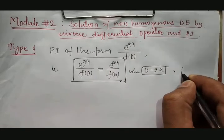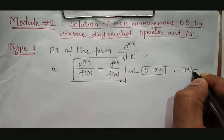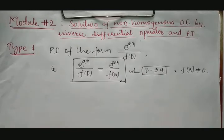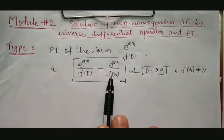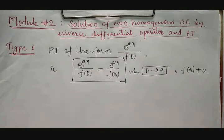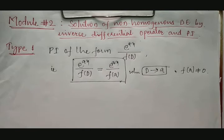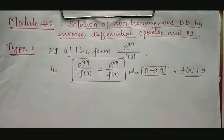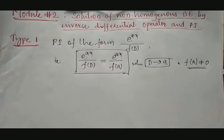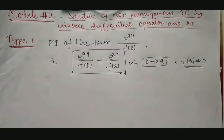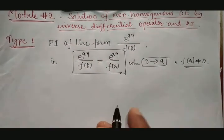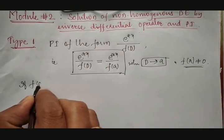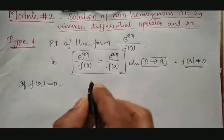We must note that f(a) should not be equal to 0, because of basic mathematical operations — if it becomes 0, the denominator is 0 and the whole value becomes infinity. Suppose the value of f(a) becomes 0, then what to do?